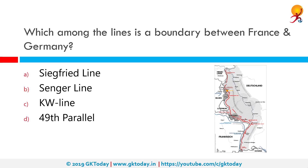Which among the following lines is a boundary between France and Germany? The correct answer is the Siegfried Line. This line, known in German as the West Wall, was a German defensive line built during the 1930s, opposite the French Maginot Line.